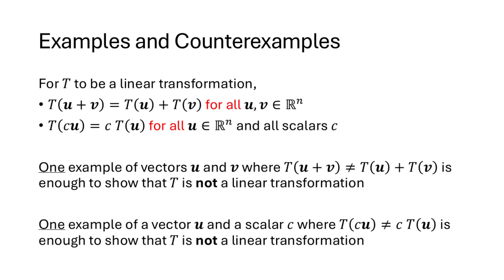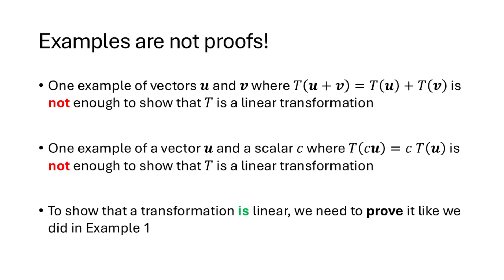For T to be a linear transformation, T(u + v) must equal T(u) + T(v) for every vector u and v in Rn, and T(cu) must equal c·T(u) for all vectors u and all scalars c. One example of a pair of vectors where T(u + v) ≠ T(u) + T(v) is enough to show T is not linear. But if you want to show T is linear, one example where things work out is not enough — you have to prove it for all vectors.